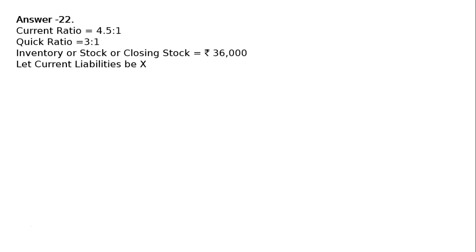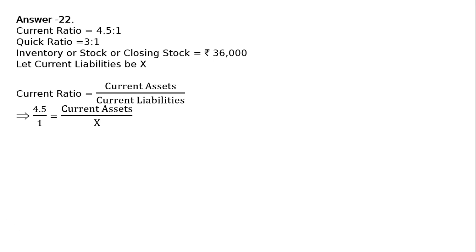Current ratio is equal to current assets upon current liabilities. This implies that 4.5 upon 1 is equal to current assets upon X. By cross multiplying, current assets is equal to 4.5X.